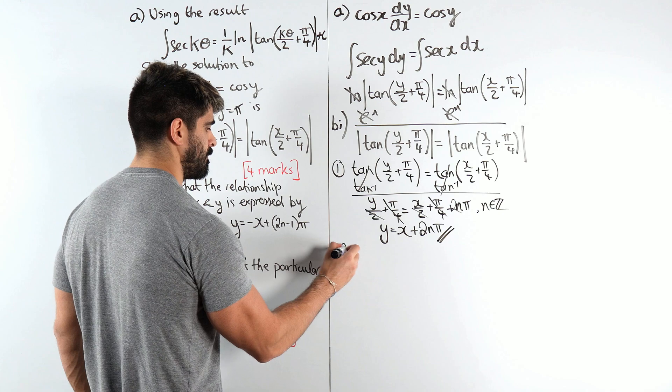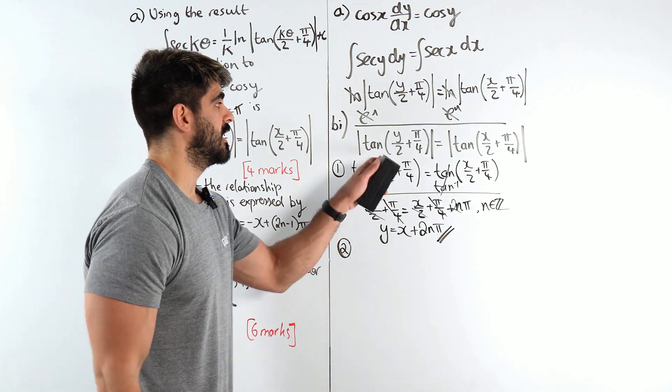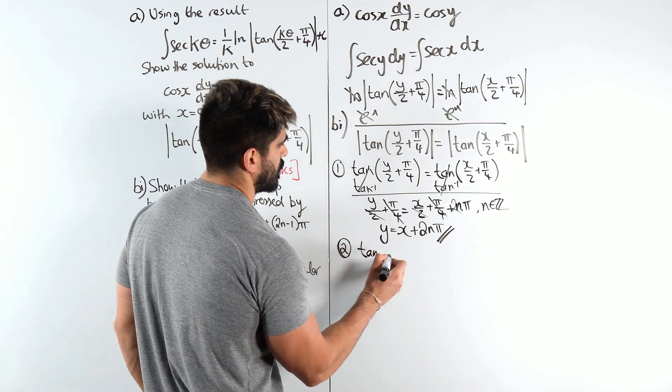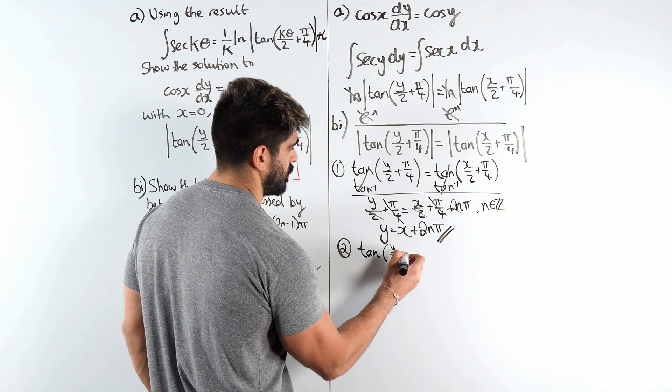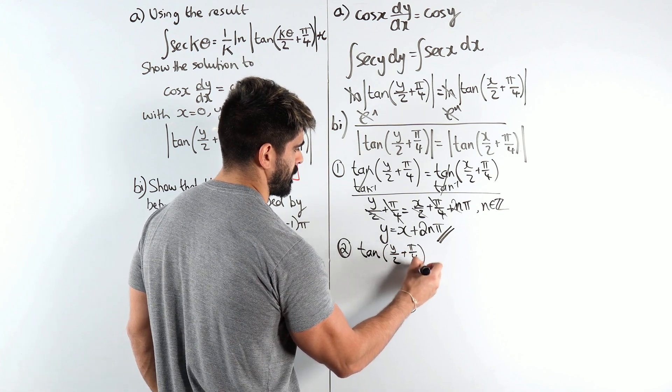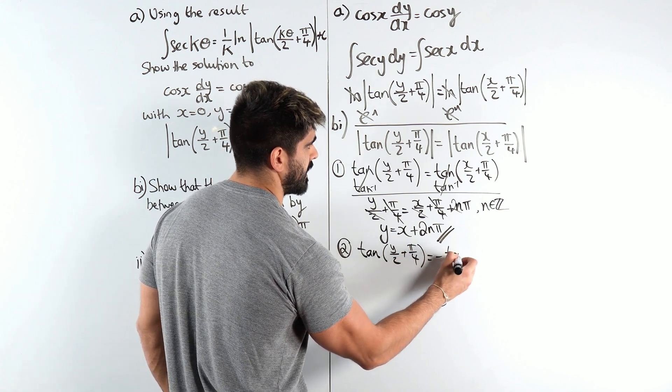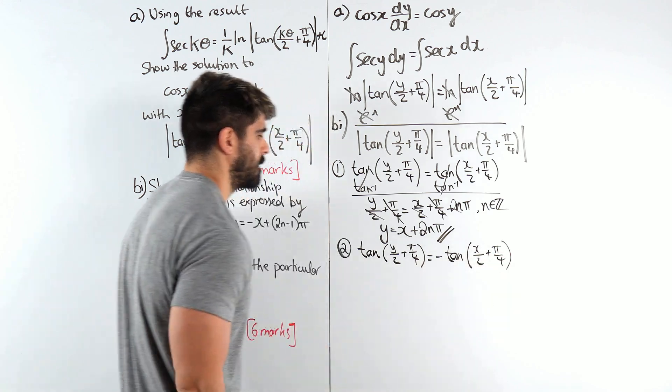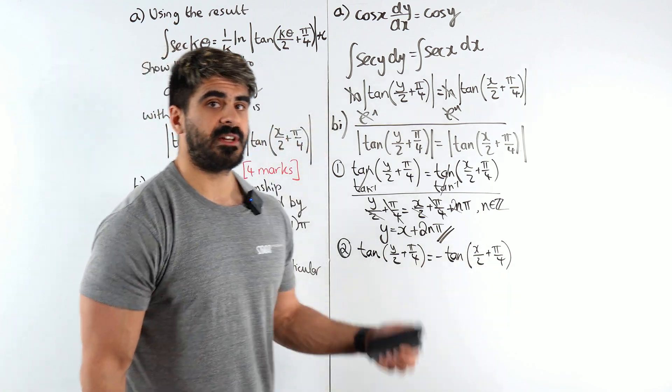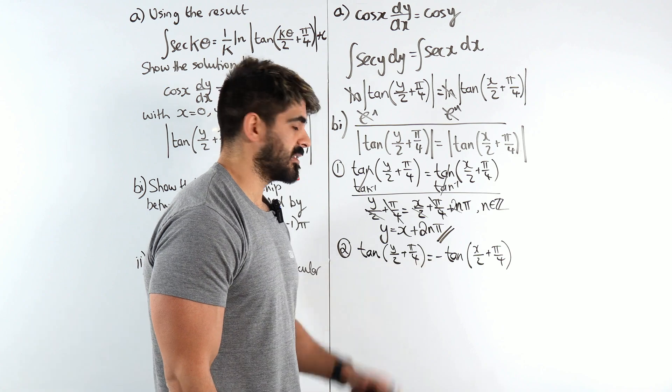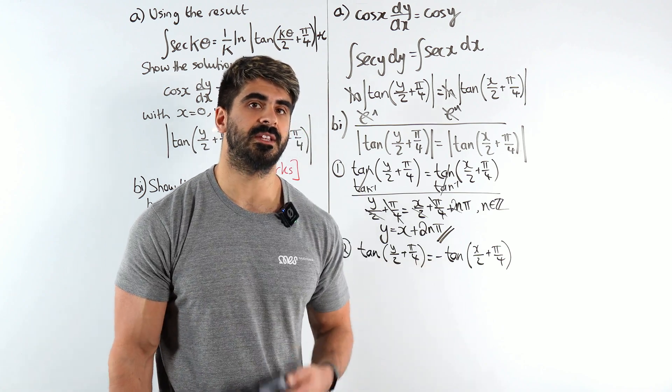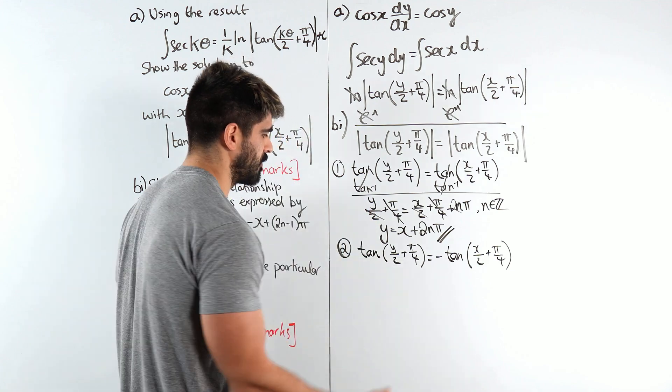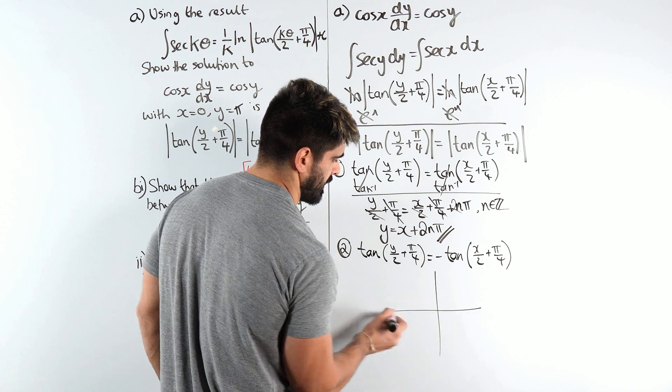Now the second way we need to think, remember I said this can equal this or this can equal the negative of this. So tan of y over 2 plus pi over 4 is the negative of tan x over 2 plus pi over 4. Now we cannot just inverse tan on both sides because that minus is in the way. We need to establish that tan is what's known as an odd function.